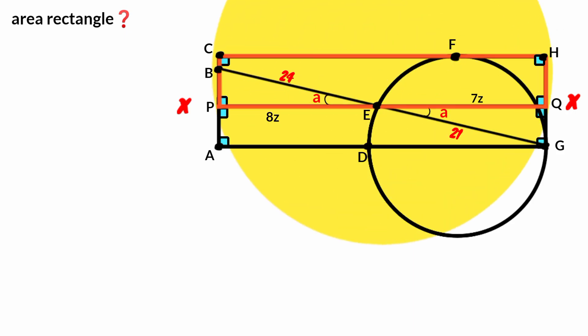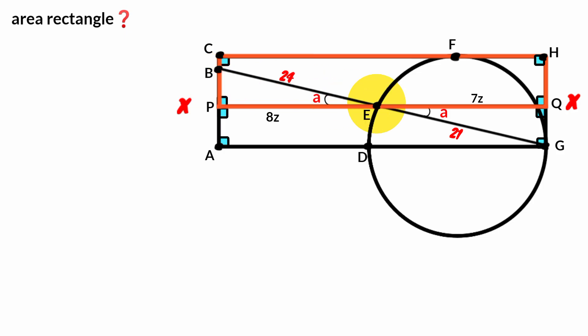Look at this quadrilateral CPQH — all its angles are right angles, which makes it a rectangle. In a rectangle, opposite sides are equal in length. This side and this are equal, and this and this are equal. Since this side has length equal to the sum of HC and 7Z, this side must also be HC plus 7Z, which is 15Z.